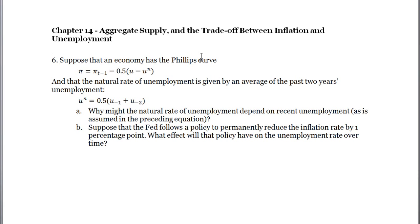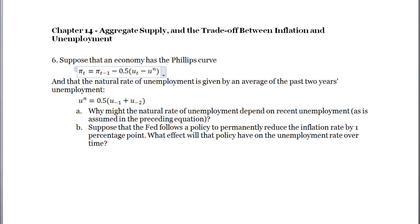Let's get to the actual problem. Suppose the economy has this Phillips curve: inflation today equals inflation yesterday — a stand-in for expected inflation — minus the deviation between unemployment today and the natural rate of unemployment. Normally, under the natural rate hypothesis, the natural rate is just a fixed constant through time.